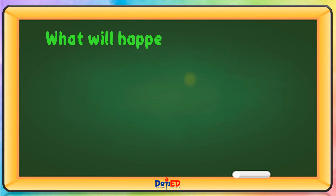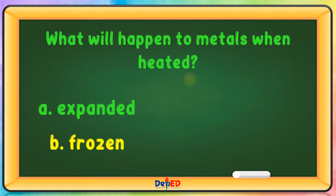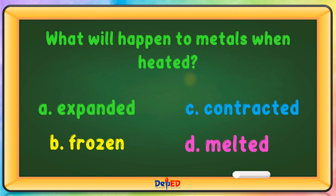What will happen to metals when heated? A. Expanded. B. Frozen. C. Contracted. Or D. Melted. The correct answer is A.